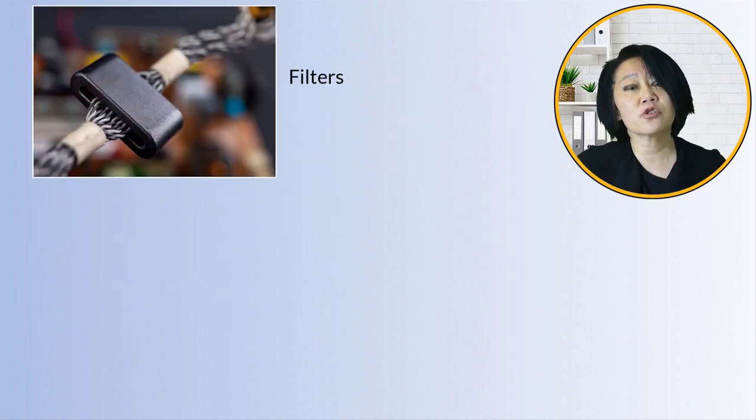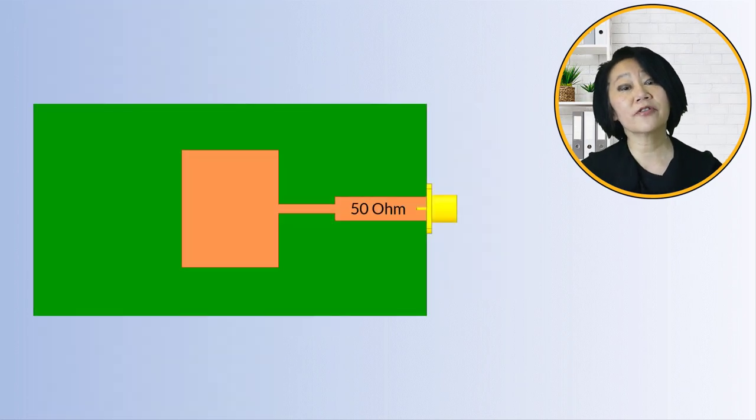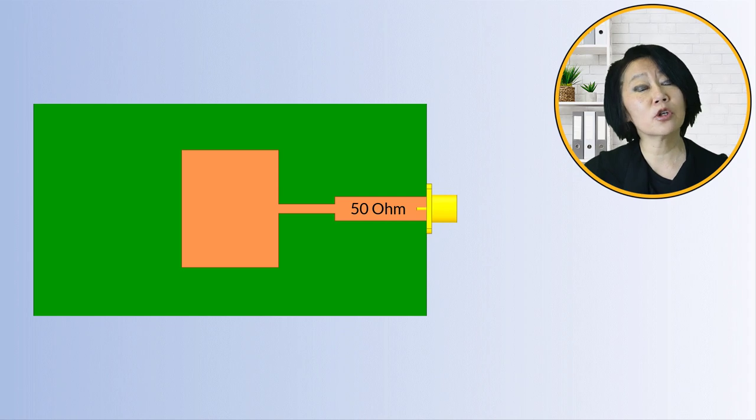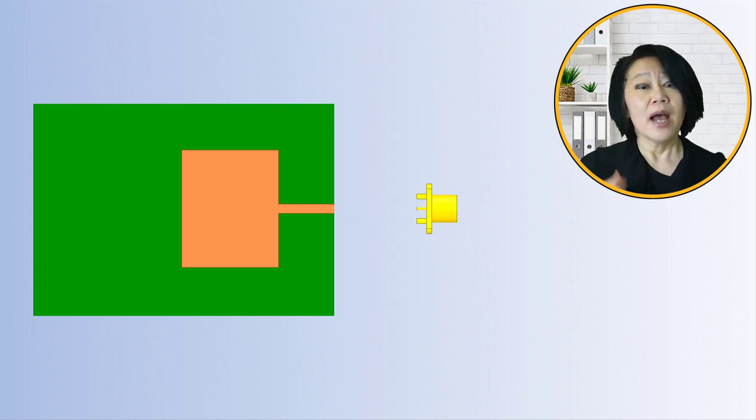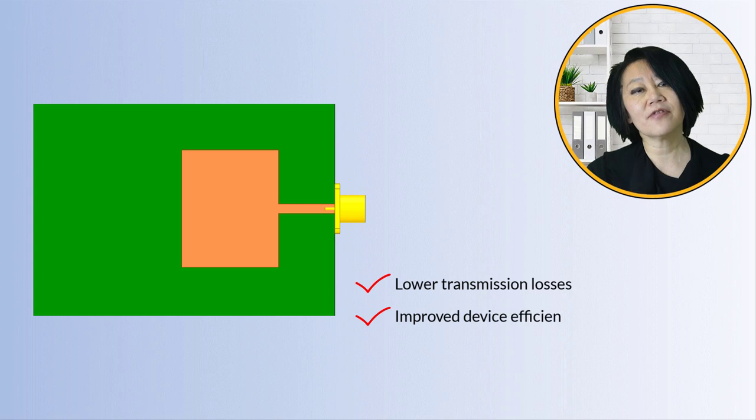Mostly we use Z0 equals 50 ohms for transmission line impedance and for input and output loads in our design equations. If this 50 ohm matching impedance step can be eliminated and we can integrate the components and move away from discrete components, we can lower the transmission line loss at all of these interconnects, thus improving device efficiency and getting size reduction.